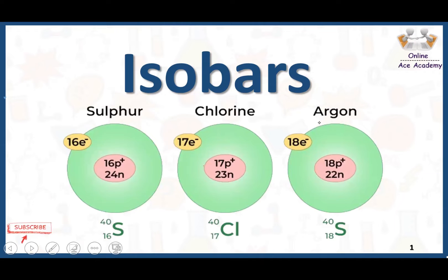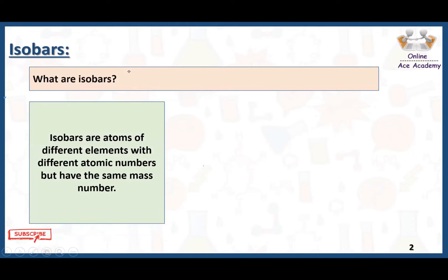In today's video we are going to learn about isobars — its definition, types of isobars, what are some examples of isobars, properties and some uses of isobars. Isobars are atoms of different elements with different atomic numbers, but they have the same mass or their mass number is the same.